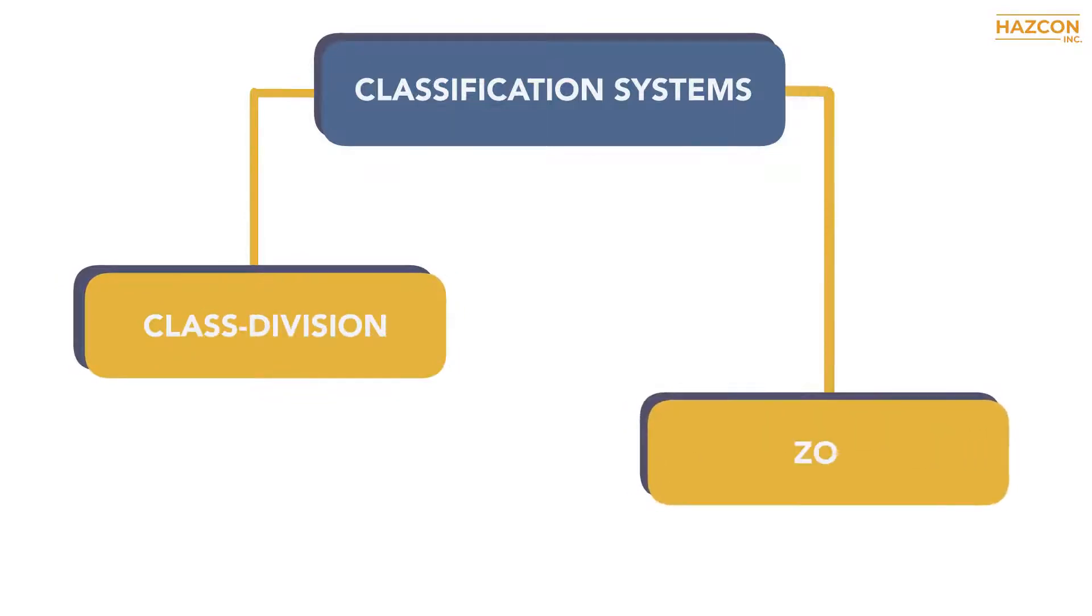Hazardous locations are classified in North America using two different classification systems: the class division and zone systems.